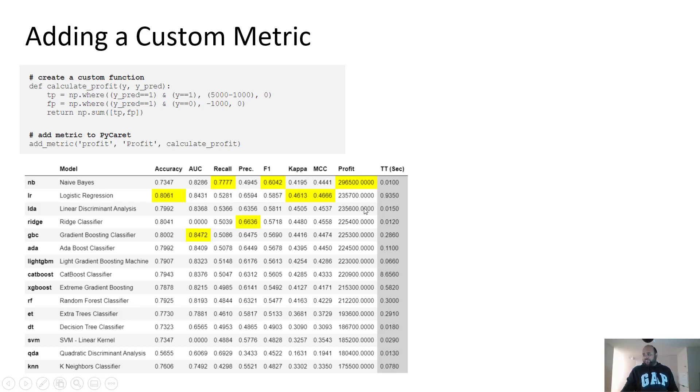And now if you notice, there's the same table except that we have a new column here, profit. And if you notice, this is now our best model based on profit, which is naive Bayes. And our best model based on AUC, which is gradient boosting classifier, is now number fifth. So now I'm making the right decision in terms of choosing a model that matters most to the business.